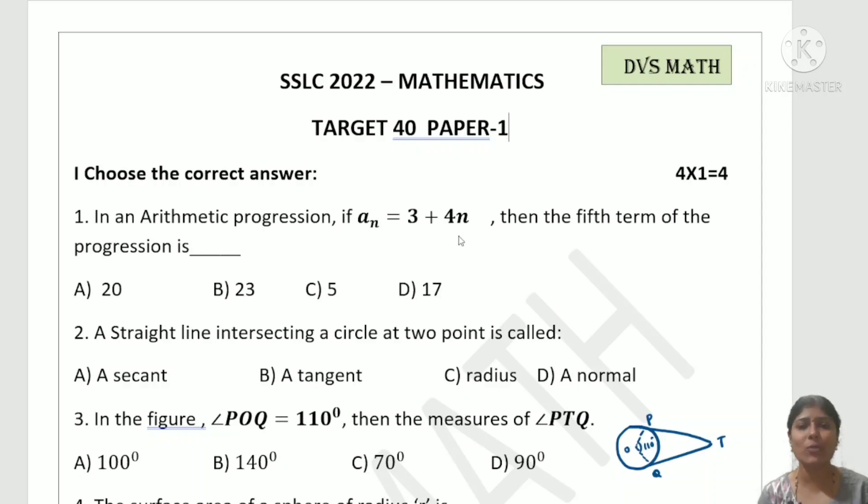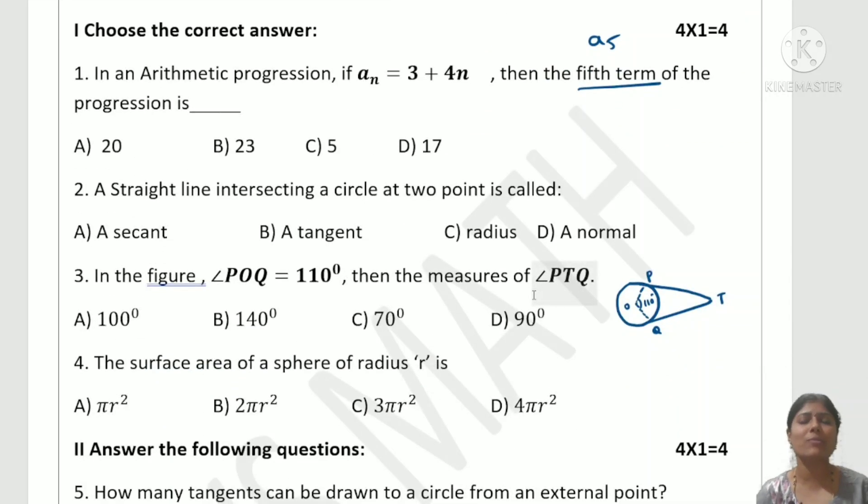First question: In an arithmetic progression, if a_n = 3 + 4n, find the fifth term. You need to find a5 by substituting n = 5. Solve it and mark the correct answer. Second question is from circle: a straight line intersecting a circle at two points is called what?